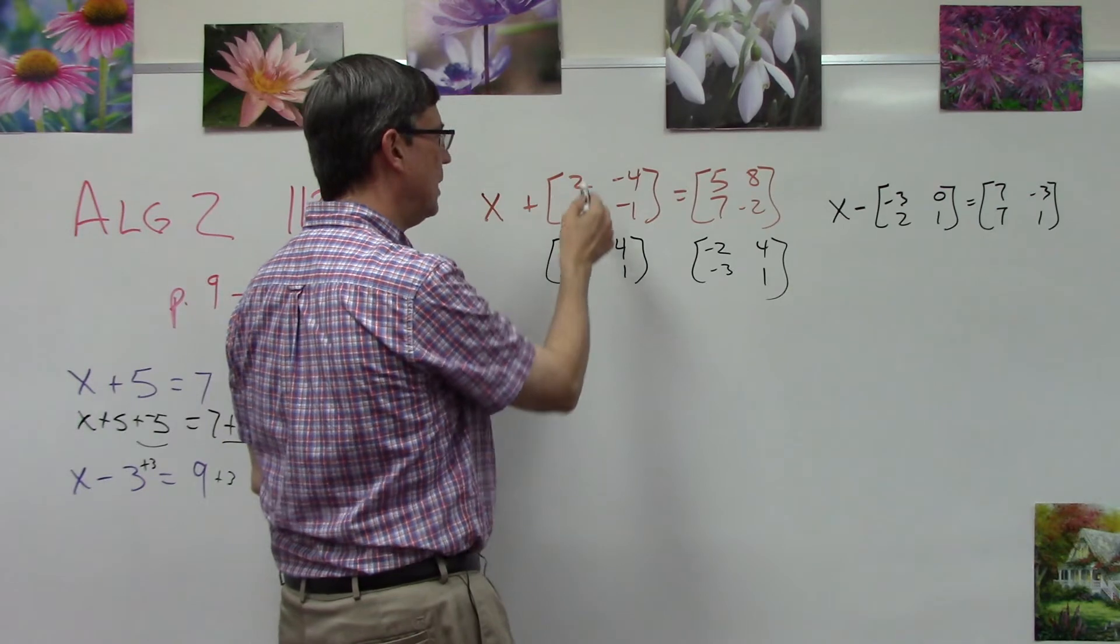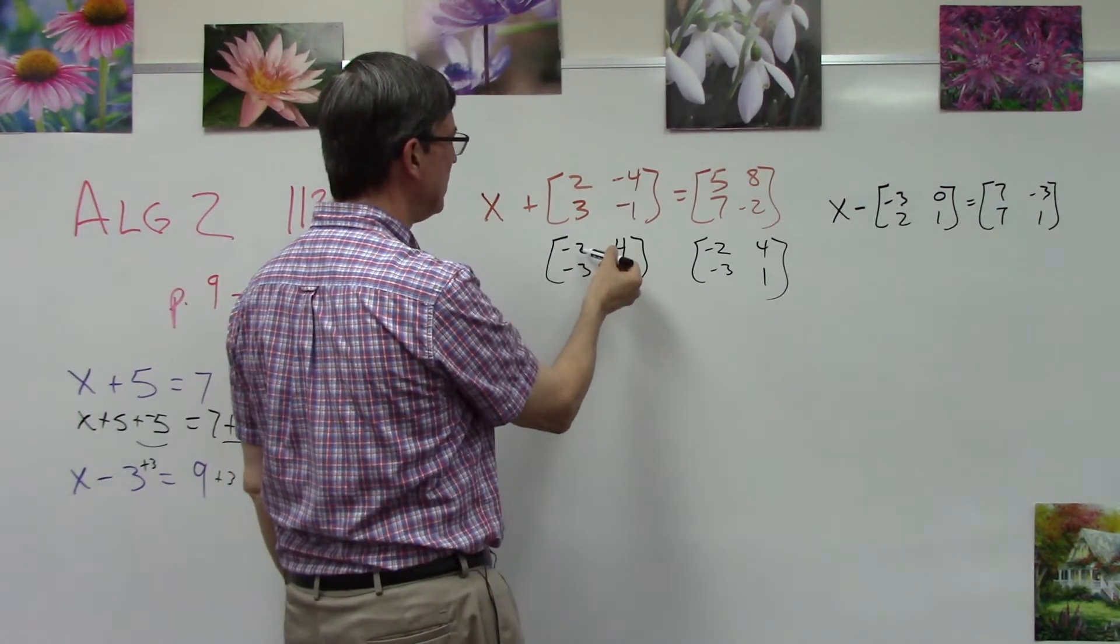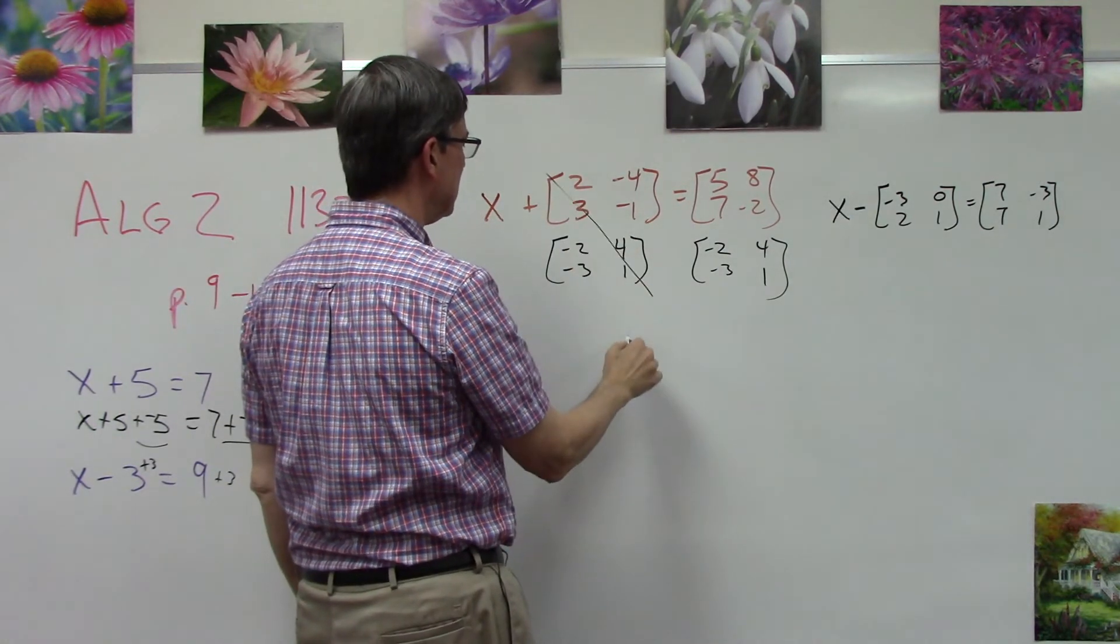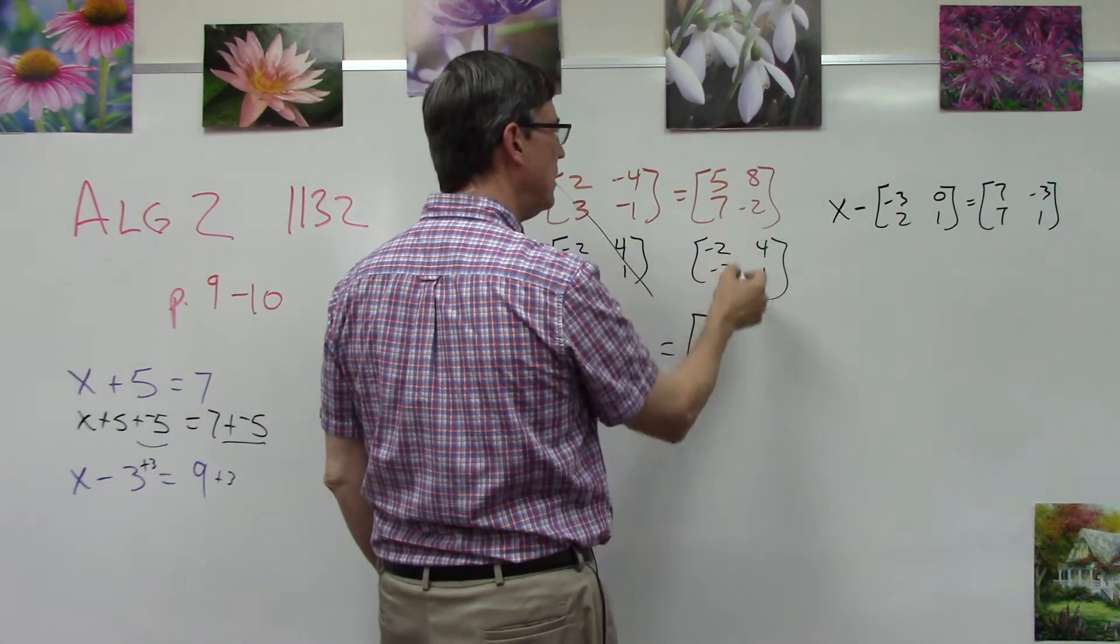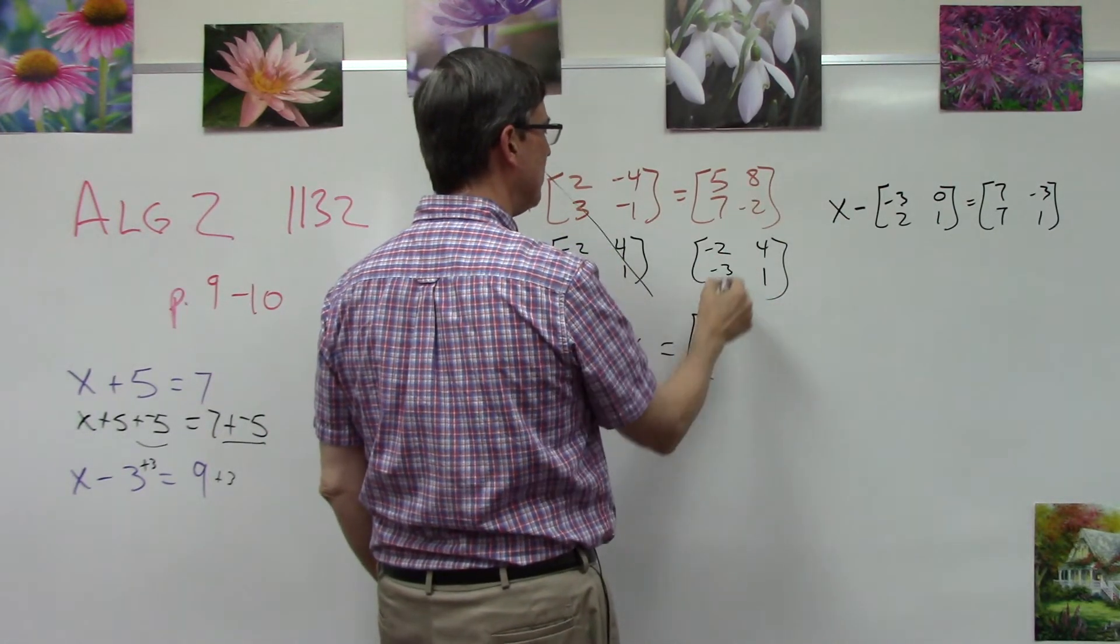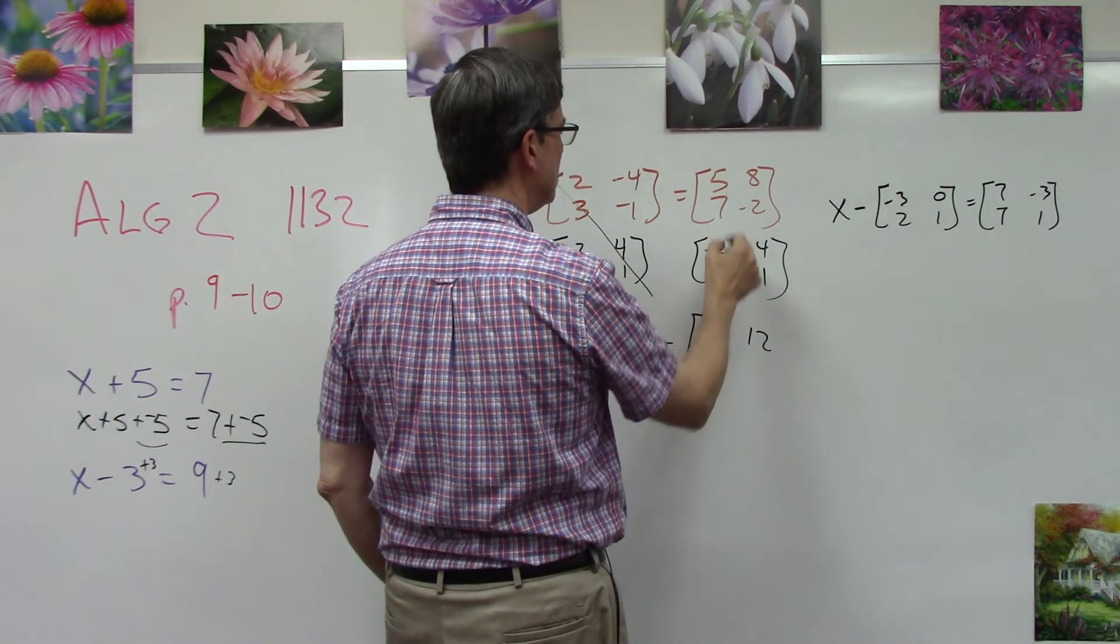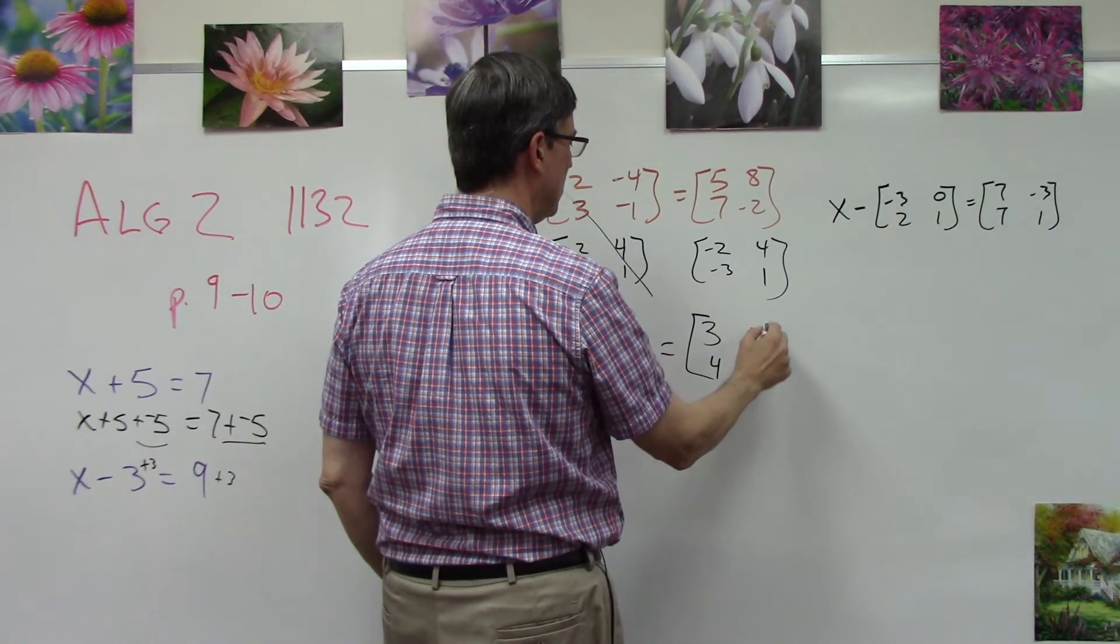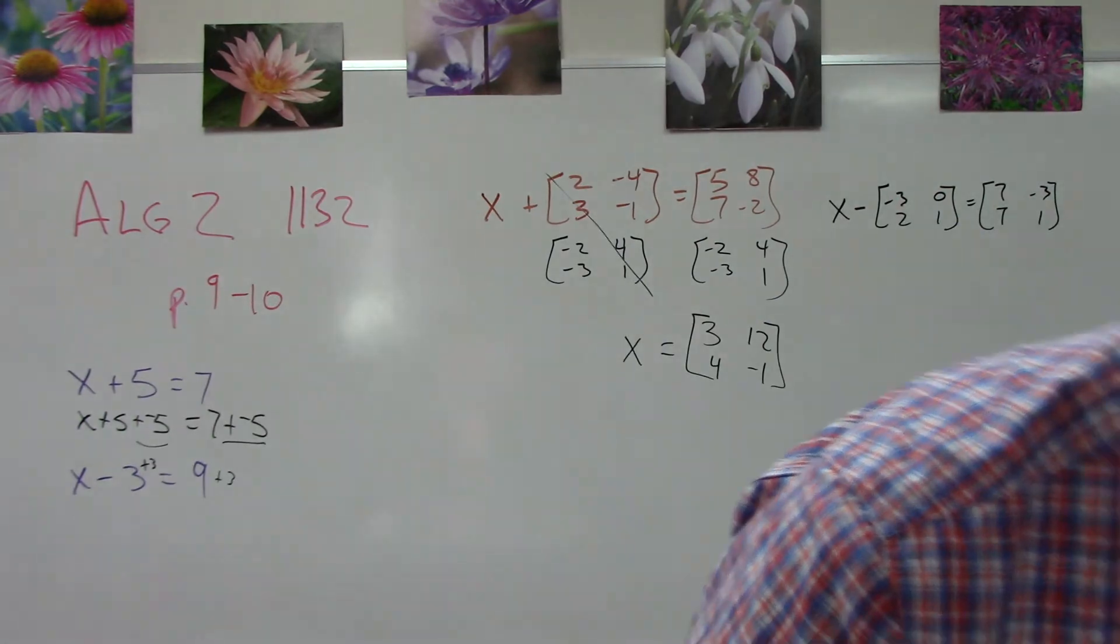If I added these two together it would become [0, 0, 0, 0] because -2 plus positive 2, 3 plus -3. So basically we got that to cancel out, and I have x equals. Now we just add these four corners: 5 + (-2) is 3, 8 + 4 is 12, 7 + (-3) is 4, -2 + 1 is -1.